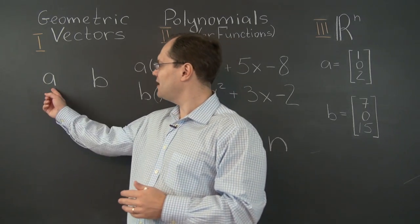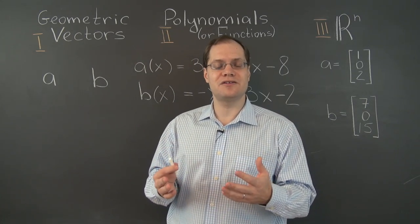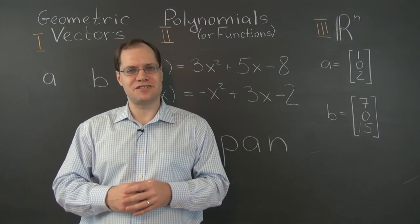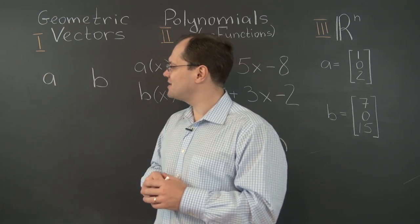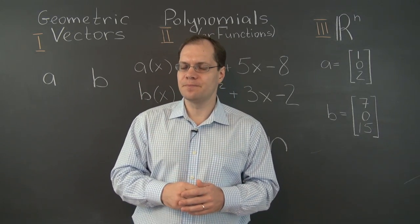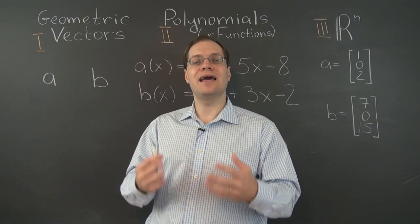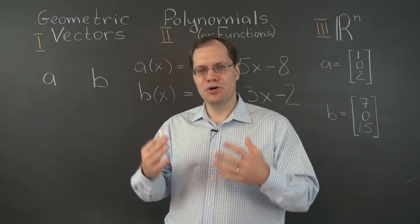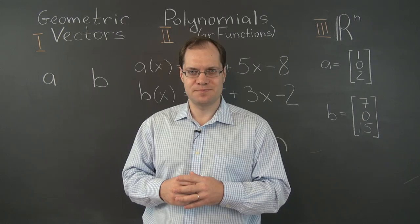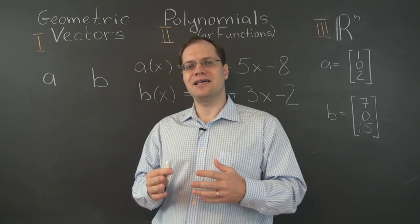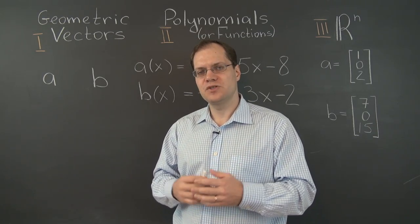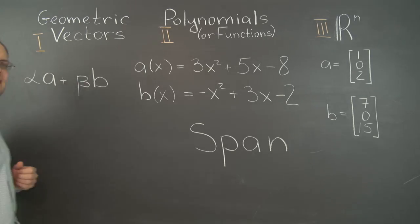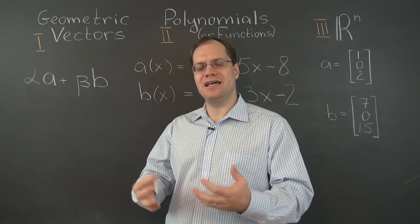Suppose you have two vectors, a and b. Spans work with any number of vectors — we could have more than two, just one, or even zero vectors. We're not specifying what kind of vectors a and b are, because spans work with all kinds of vectors. Like any concept captured by an algebraic expression, preferably in terms of linear combinations, it is a perfectly general concept that applies to all vector spaces. So given two vectors a and b, consider the set of all possible linear combinations of a and b — all vectors that can be represented as alpha·a plus beta·b, where alpha and beta are arbitrary real numbers.